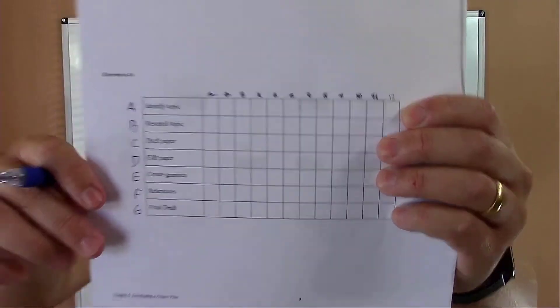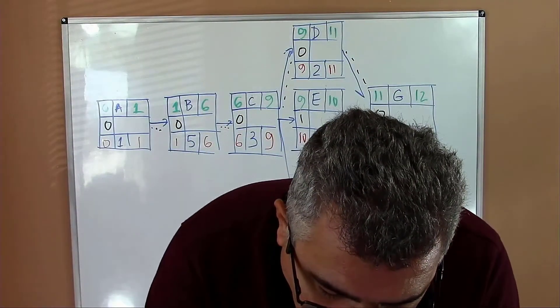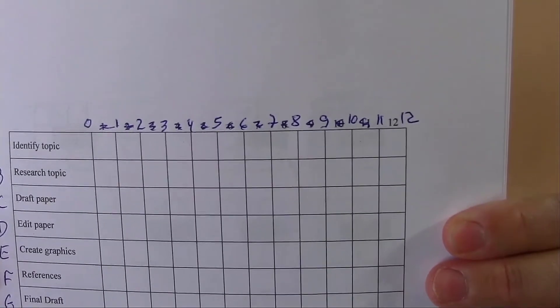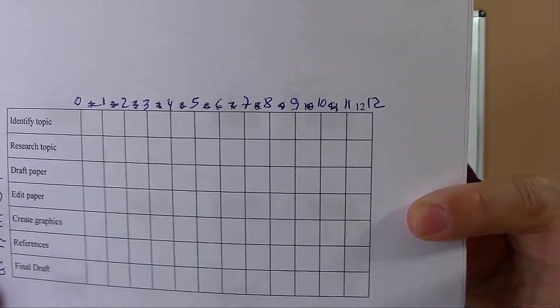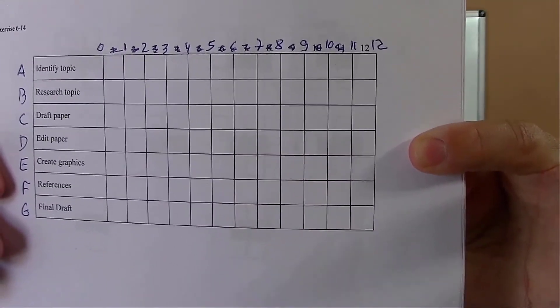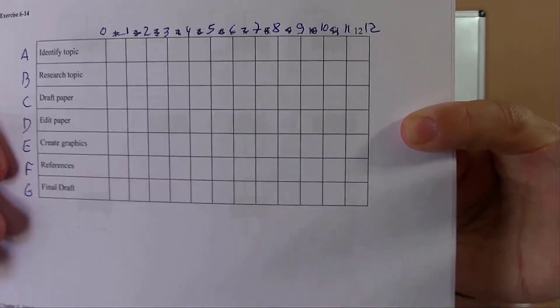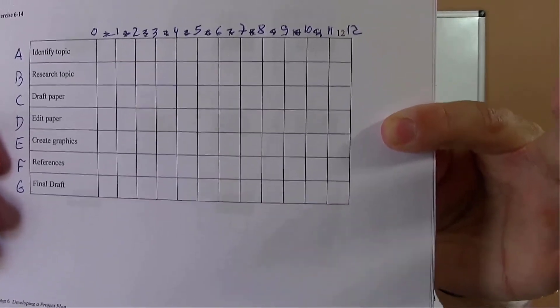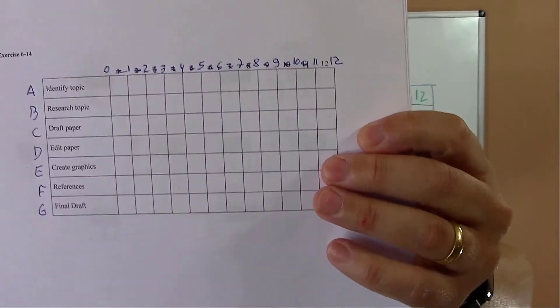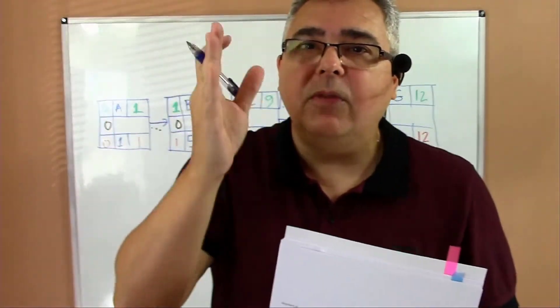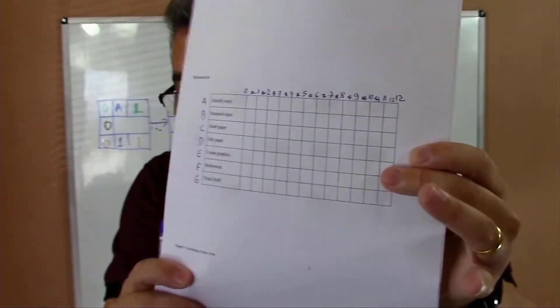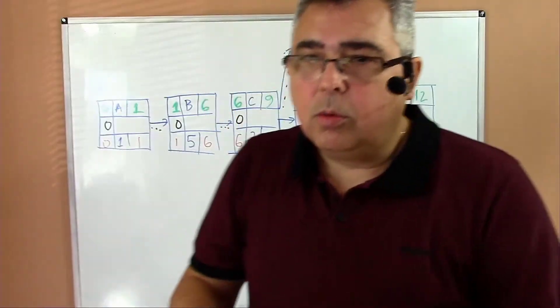I erased and put the numbers on the top of the lines. Can you see now the numbers are on the top of the line? That's very important to draw the Gantt chart. You always put the number on the top of the line.